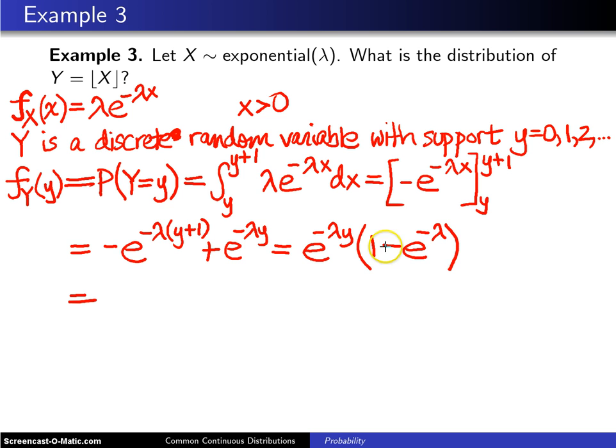Finally, if we put this term first, 1 minus e to the minus lambda, and then multiply that, I'm going to write this second term in kind of an unusual fashion. e to the negative lambda, raised to the y power. There is the probability mass function of y.